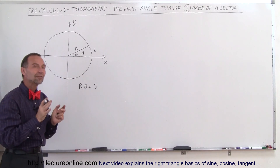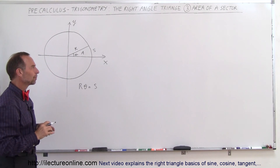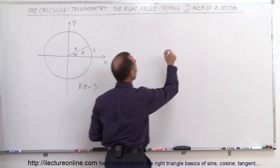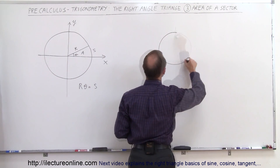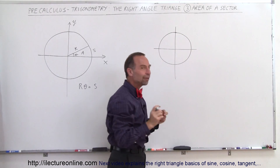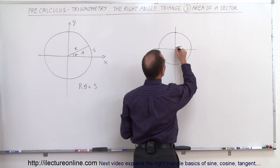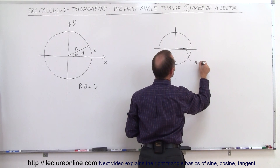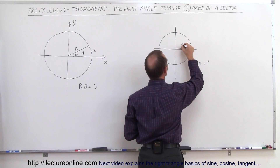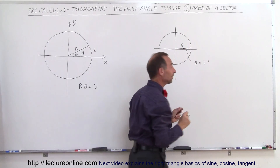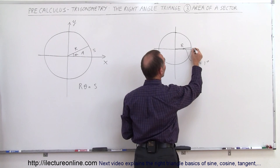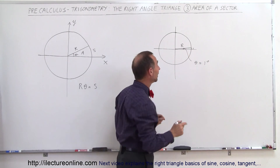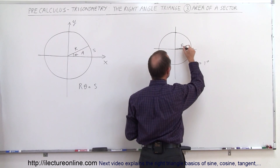So what would the area of that sector be? First, let's see where the area of the circle comes from in the first place. Let's take another circle and pick a very, very small angle — say we take an angle of one degree, so theta equals one degree. We still have the radius, and now the arc length s, which is this small distance right here, is going to be just about equal to the side of a triangle.